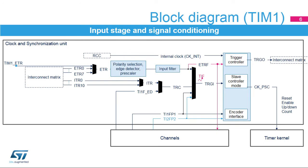The clock and synchronization unit provides the reference clock CKPSC to the timer kernel. The counter clock can come from the internal clock CK_INT, external clock mode 1 (external input pin counting each rising or falling edge on a selected input or internal triggers), external clock mode 2 (ETR or triggers), or encoder mode based on TI1FP1 and TI2FP2. ETR is a trigger that can be asserted by ADC analog watchdogs, comparators, or the ETR input. ITR is a trigger that can be asserted by another timer.